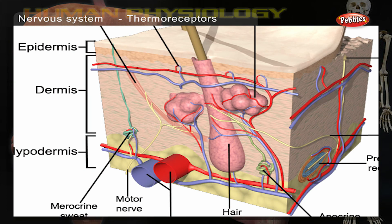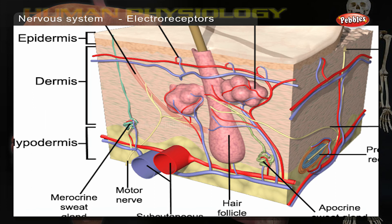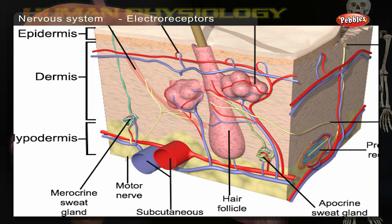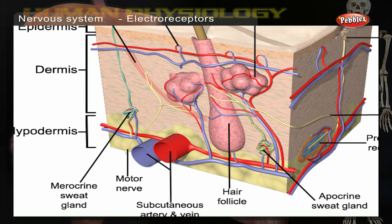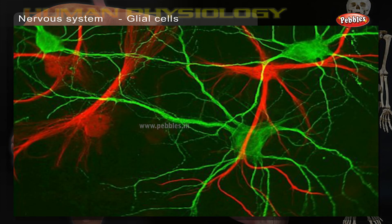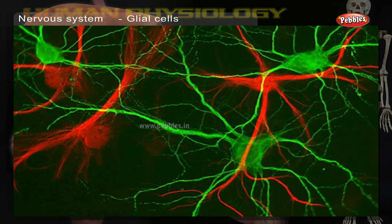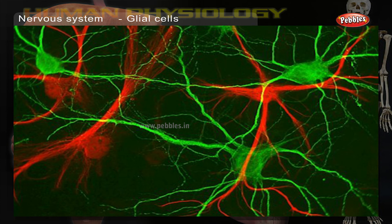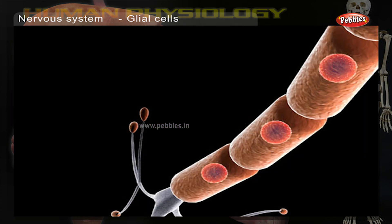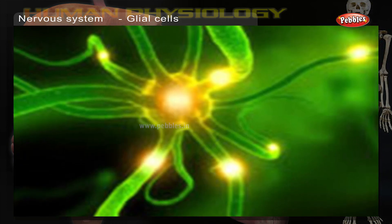Thermoreceptors detect changes in temperature. Electro-receptors detect electrical currents in the surrounding environment. Glial cells are non-neuronal cells that provide support and nutrition, maintain homeostasis, form myelin and participate in signal transmission in the nervous system.